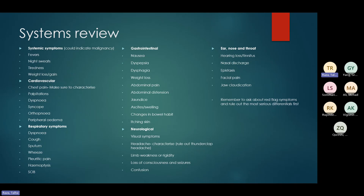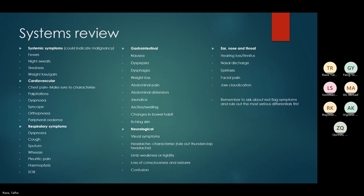Changes in bowel habit — diarrhea or constipation. Neurological symptoms: visual symptoms, headaches, limb weakness, falls, loss of consciousness, and confusion — anything to do with the head, as it controls everything. ENT: hearing loss (conductive versus sensorineural), nasal discharge, epistaxis (nosebleed), facial pain, jaw pain or claudication. We'll go over these in more detail in the coming slides.